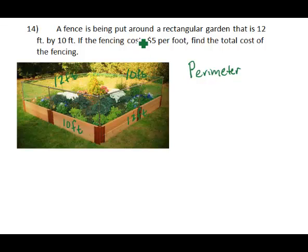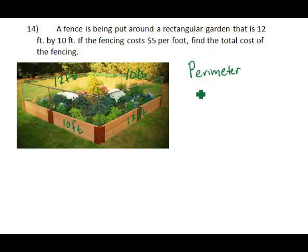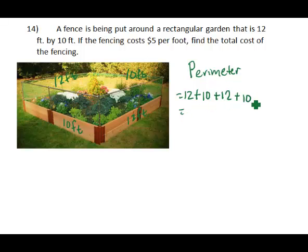One way to calculate the perimeter would be to simply add the measurements all the way around the outside. So if we begin from this corner and add 12 plus 10 plus 12 plus 10, that would give us the entire length all the way around the garden — our perimeter calculation — which would be 44 feet.